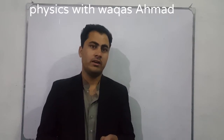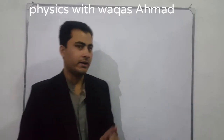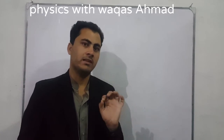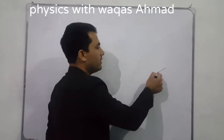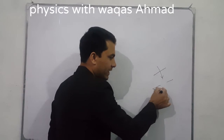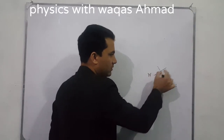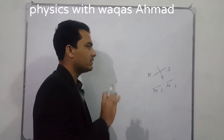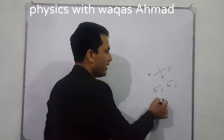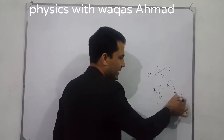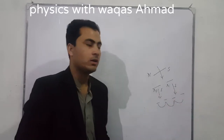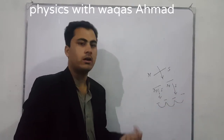A magnet basically consists of two poles: north and south. There is no separate monopole — no separate north or south pole alone. For example, if you cut a magnetic material into two pieces, those two pieces again consist of north and south poles. Even if you cut further, each piece again has both north and south poles.